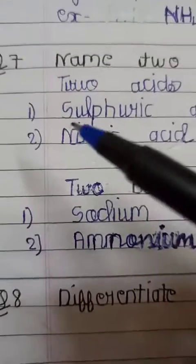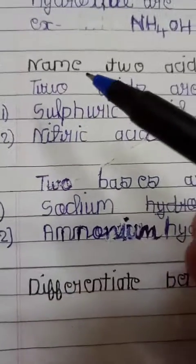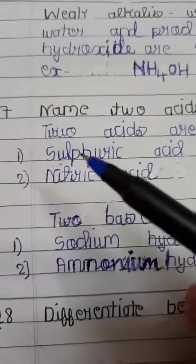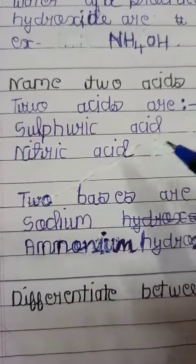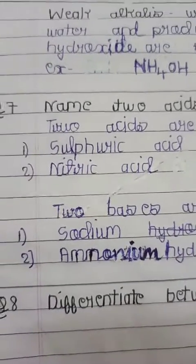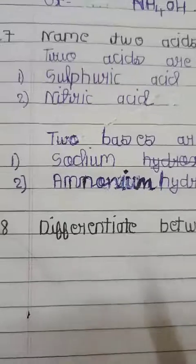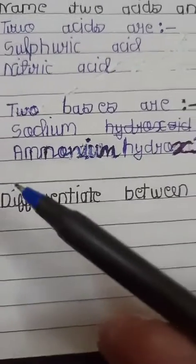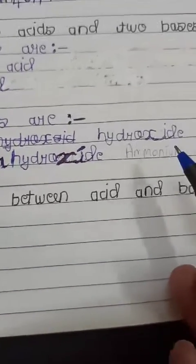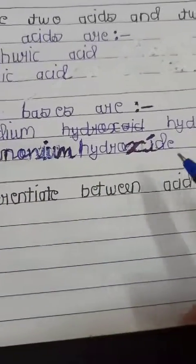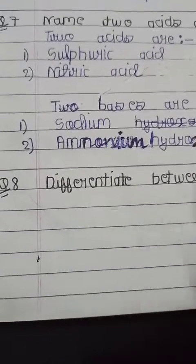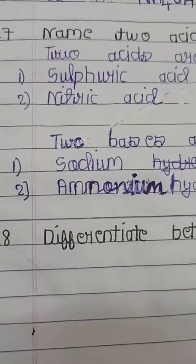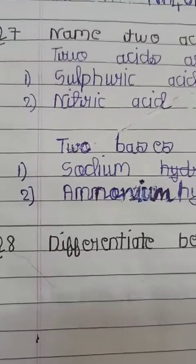Next, question number seven: name two acids and two bases. Two acids are sulfuric acid and nitric acid, or you can write any two names of your choice - I have given you so many names of acids. Two bases: we have just studied sodium hydroxide and ammonium hydroxide - you can write these two names. We will discuss the next question answers in the next video. Thank you.